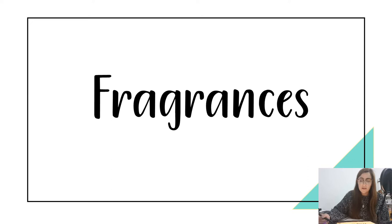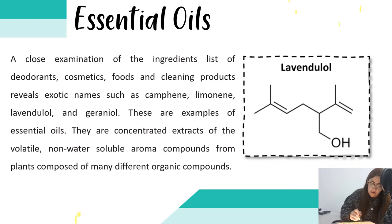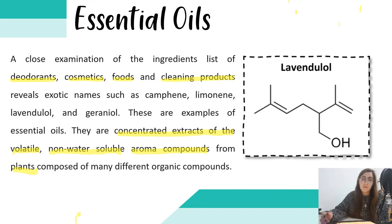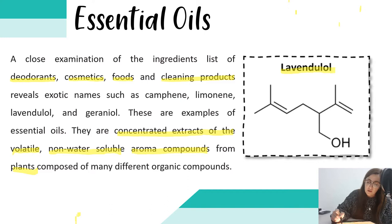Today we are going to look at the essential oils and terpenes, which come under the fragrances topic. Essential oils are the concentrated extracts of the volatile, non-water-soluble aroma compounds from plants, and they are composed of many different organic compounds. You'll see these in things like deodorants, cosmetics, foods, and cleaning products. The essential oils present in these products include camphene, limonene, linalool, and geraniol.